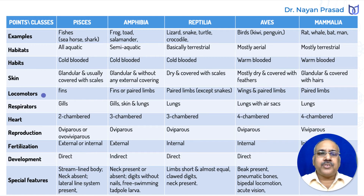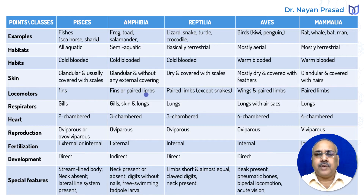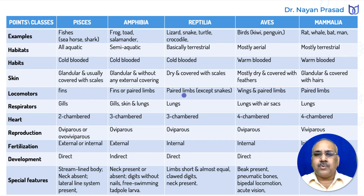Talking about locomotory structures: fishes move with the help of different fins. In Amphibia, fins are seen in certain larval forms, and most members have paired limbs, though limbs are absent in some individuals. In reptiles, the locomotory structures are paired limbs, which are absent in snakes. In birds, wings are present — one characteristic feature — along with paired hind limbs suited for walking on land. Mammals also have paired limbs.